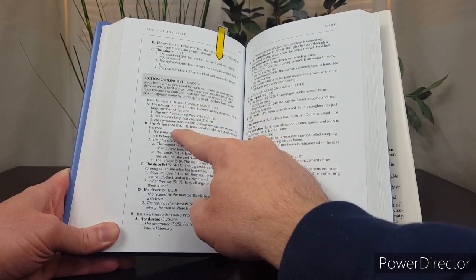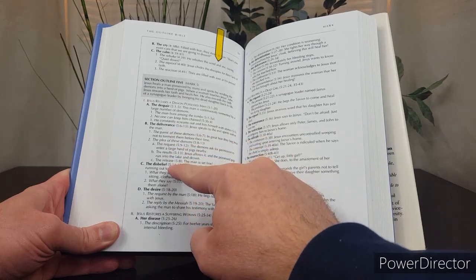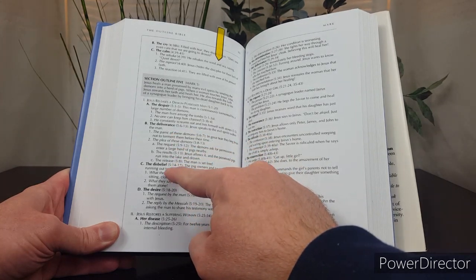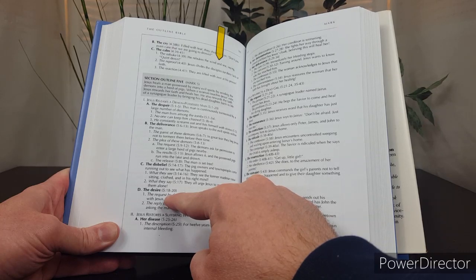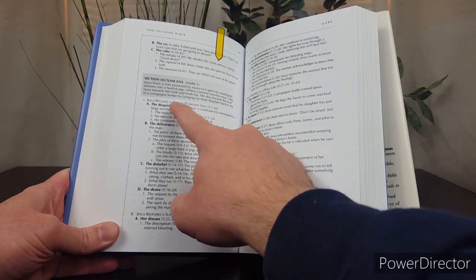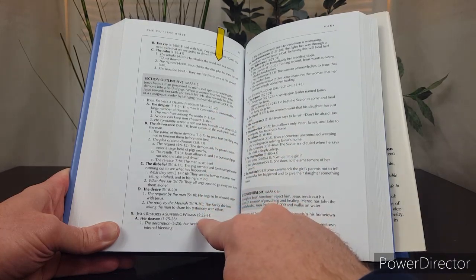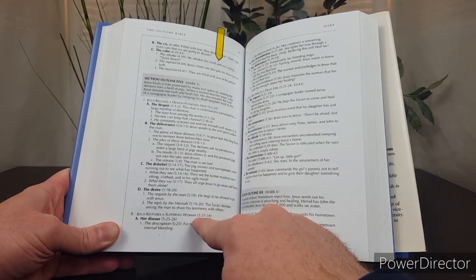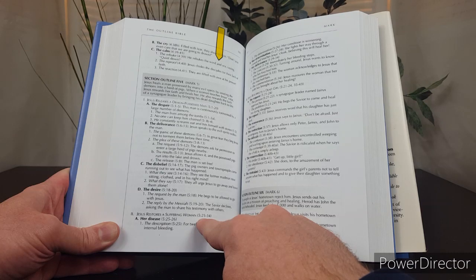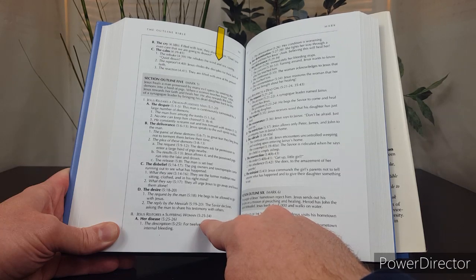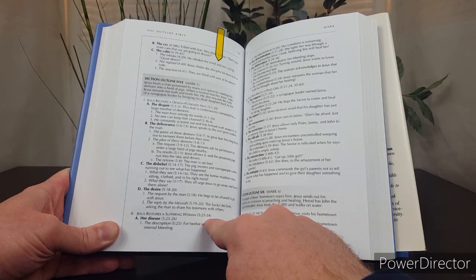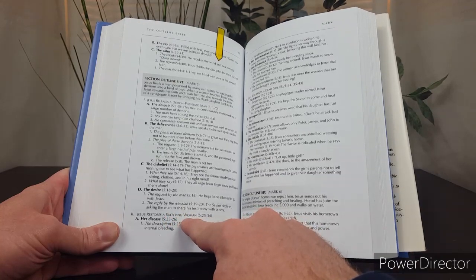The second, The Deliverance. The third, The Disbelief. And the fourth, The Desire. Jesus Releases a Demon-Possessed Man, verses 1 through 20. And then, verses 25 through 34, Jesus Restores a Suffering Woman. So, here's an example of some of the arrangement you might come across.